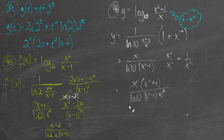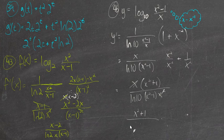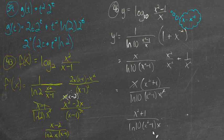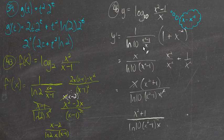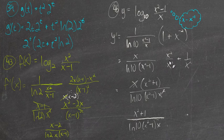We can cancel one factor of x, leaving x squared plus 1 over the natural log of 10 times x squared minus 1 times x. I'm tempted to factor the denominator as a difference of squares to get x plus 1 times x minus 1, but that wouldn't cancel with anything, so that's the best we can do. You may prefer to use the quotient rule — I think that probably would have been a better idea — but whatever you choose is up to you.